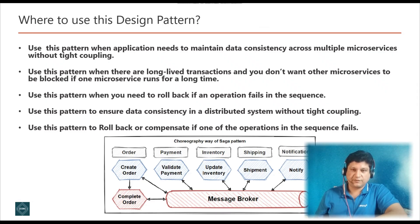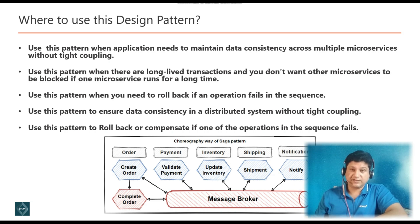Now let's see some use cases of the Saga design pattern. Use Saga when an application needs to maintain data consistency across multiple microservices without tight coupling. Use it when there are long-lived transactions and you don't want other microservices to be blocked if one runs for a longer time. Use it whenever you need to be able to roll back if an operation fails in the sequence, and to ensure data consistency in distributed systems without tight coupling. The Saga design pattern is less suitable for tightly coupled transactions.